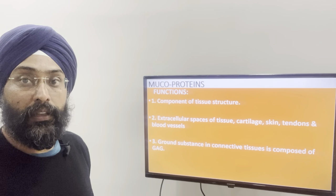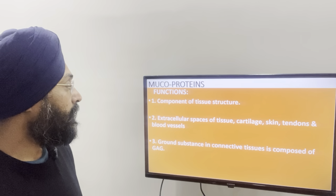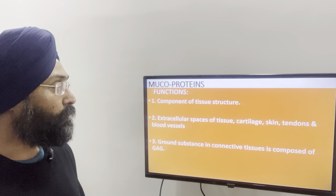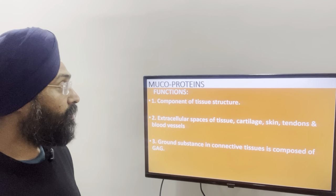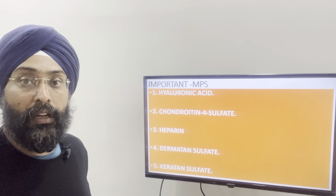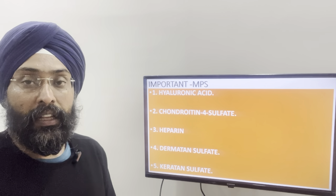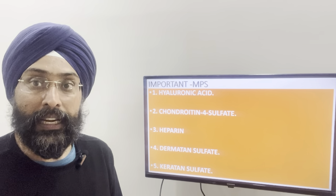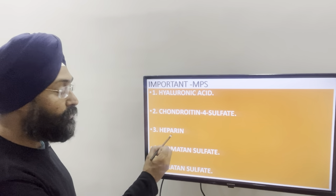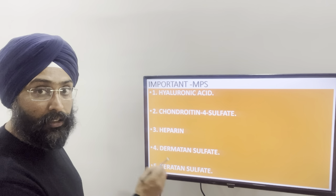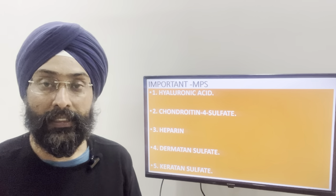Now coming on to the mucoproteins and their functions — they are components of tissue structure and help in the formation of extracellular space of tissue, cartilage, skin, tendons, and blood vessels. Ground substance of connective tissue is composed of glucosaminoglycans. Now, the five important mucopolysaccharides are remembered with the code H, C, H, D, and K: H for hyaluronic acid, C for chondroitin sulfate, H for heparin, D for dermatan sulfate, and K for keratan sulfate.